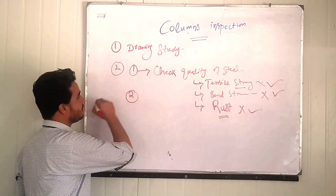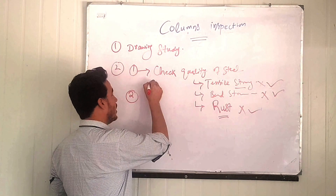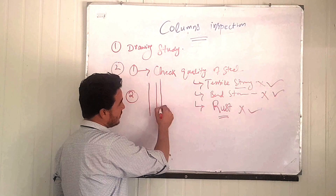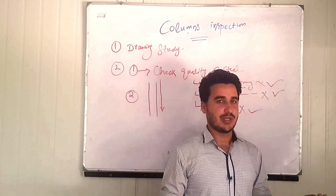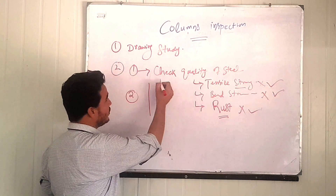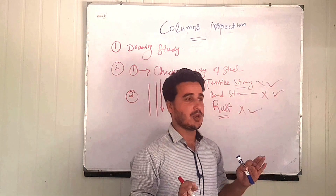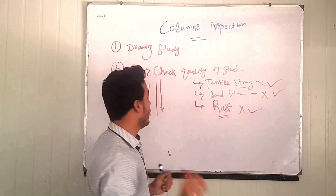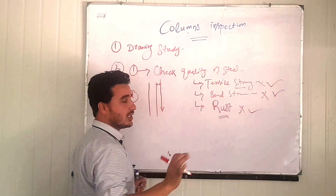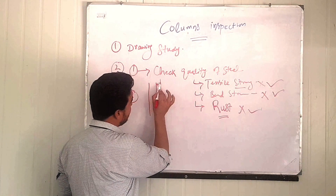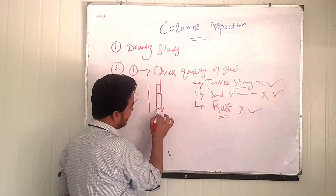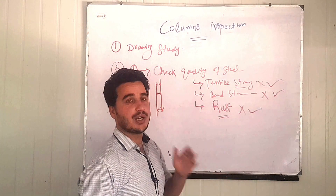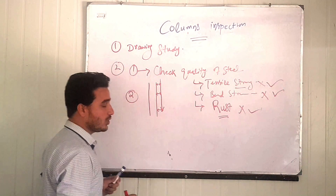The third point: whenever you reach the column site, check the height and verticality using a plumb bob. A plumb bob is a leveling apparatus. You check whether the difference between the top of the column and the plumb bob reading at the base is equal on all sides. If it is not equal, you must correct it before proceeding.